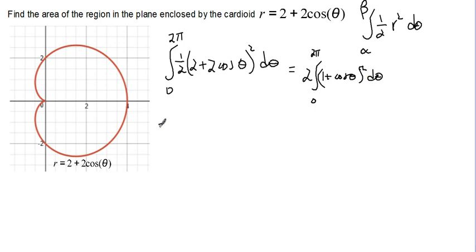which is equal to 2 times the integral from 0 to 2 pi of 1 plus 2 cosine theta plus cosine squared theta d theta.